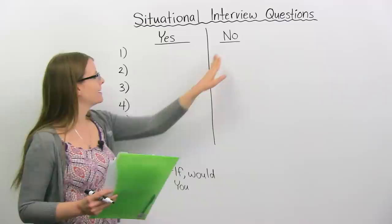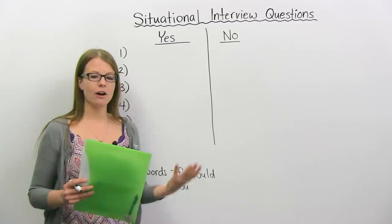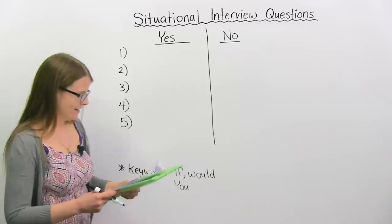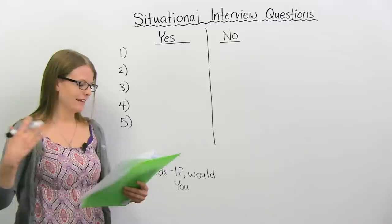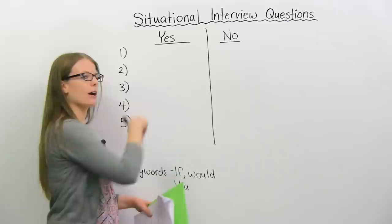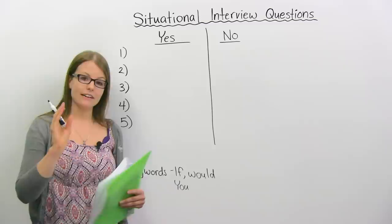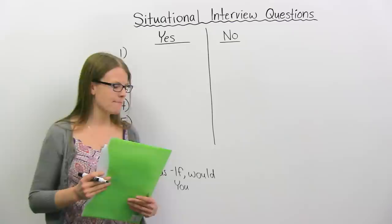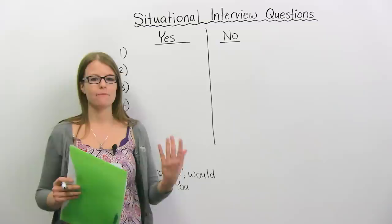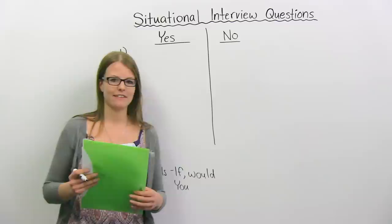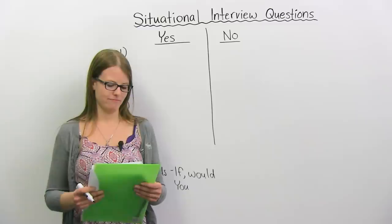You can write one, two, three, four, five — a column for 'yes' and a column for 'no.' You can pause the video, and when you're ready you can unpause it and we can begin. I'm going to say a question, and if it's situational I want you to put a checkmark under 'yes.' If it's not situational, put a checkmark under 'no.' Remember, situational questions usually have key words like 'if' and 'would,' or they might begin with a sentence that starts with 'you.'